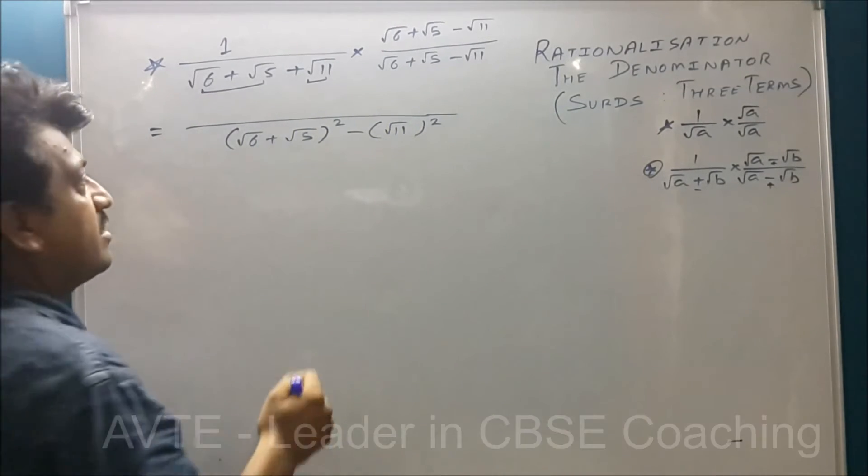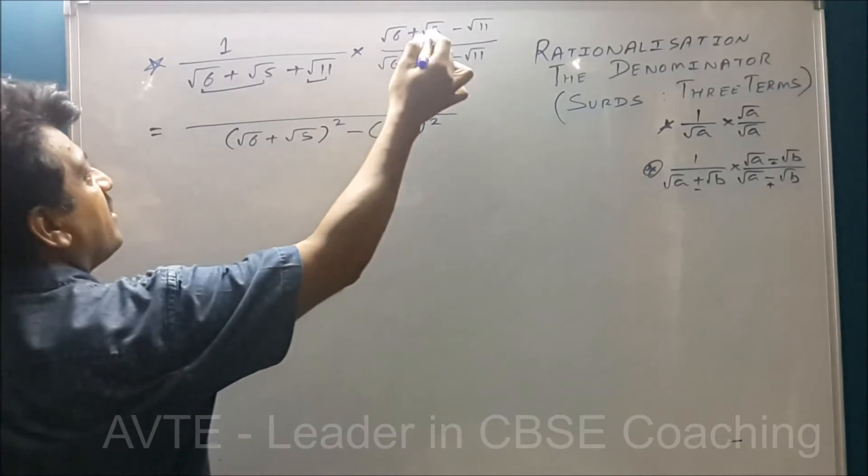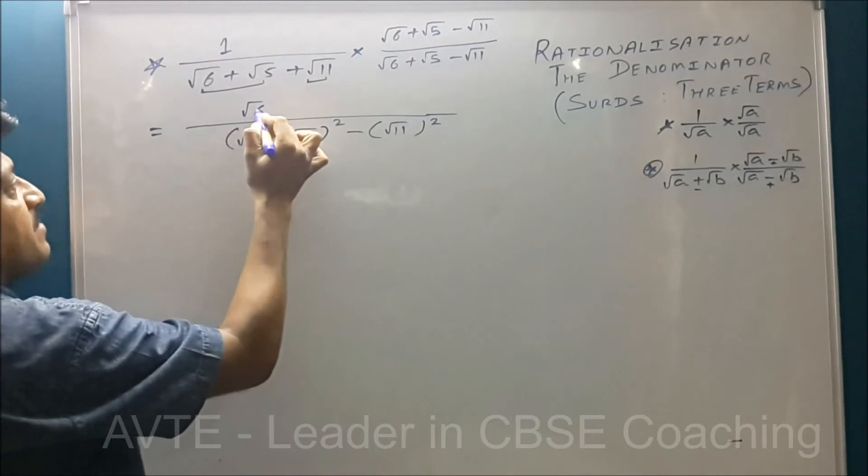Now we change the numerator part. Root 6 into 1 and root 5 into 1 and root 11 into 1, the answer remains same.